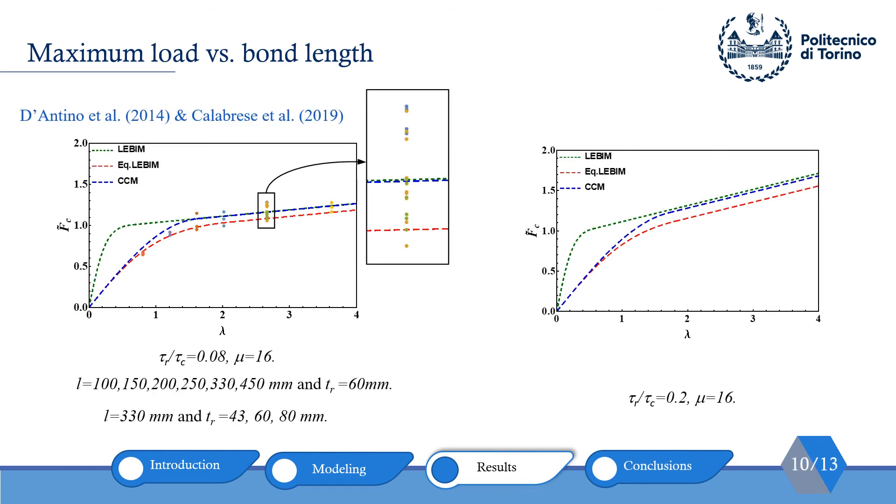In order to examine the accuracy of the models, we use the available data in the literature. For these experiments, the fraction of tau_r over tau_c was equal to 0.08 and mu was equal to 16. These experiments can be divided into two groups to investigate the effect of bond lengths and bond width. Also, we have done a parametric study and increased the residual strength up to 0.2. It can be said that by increasing the residual strength, maximum load during the debonding also increases.